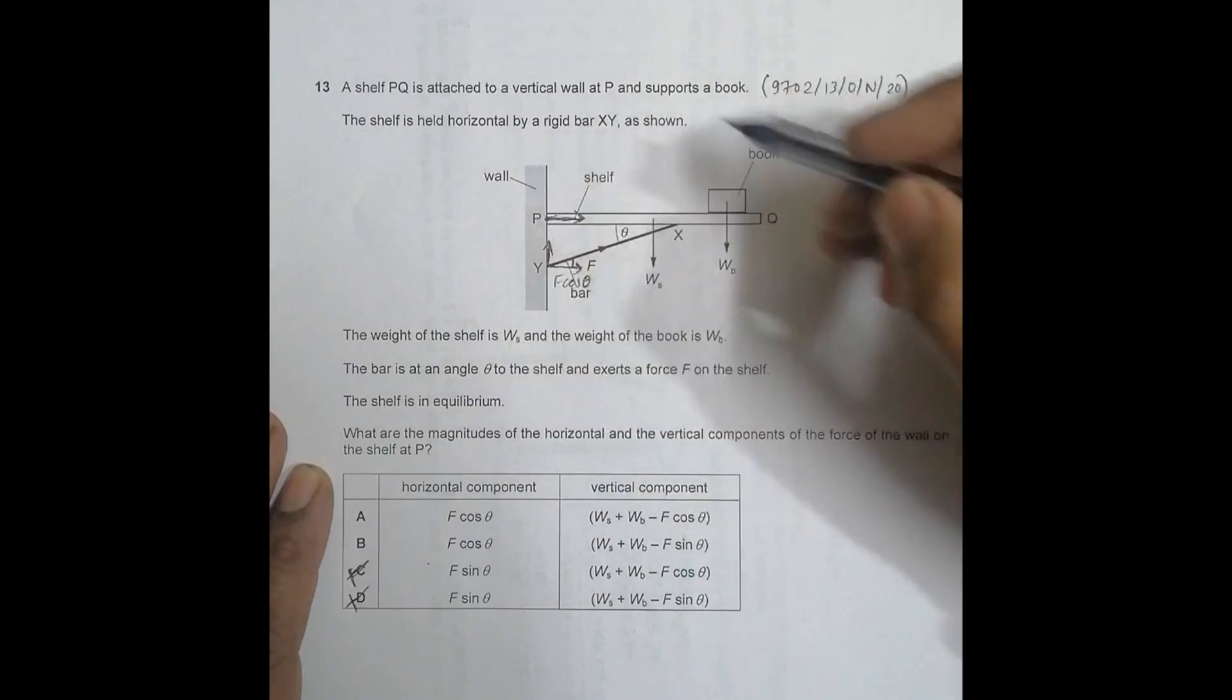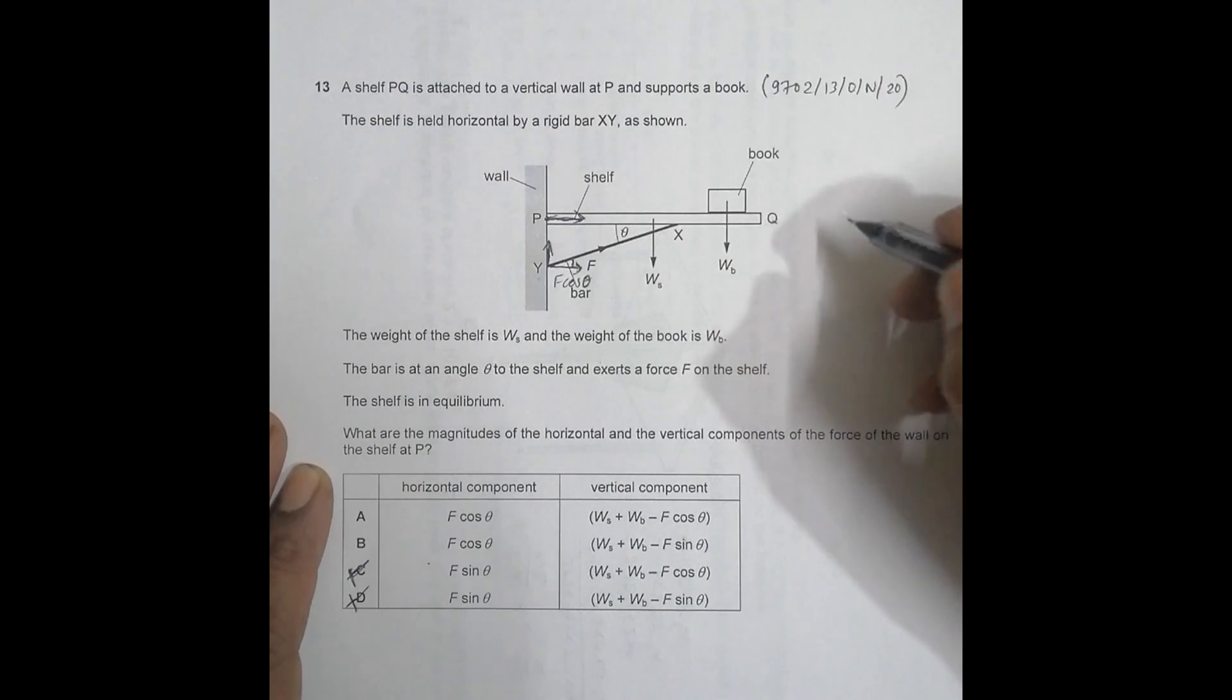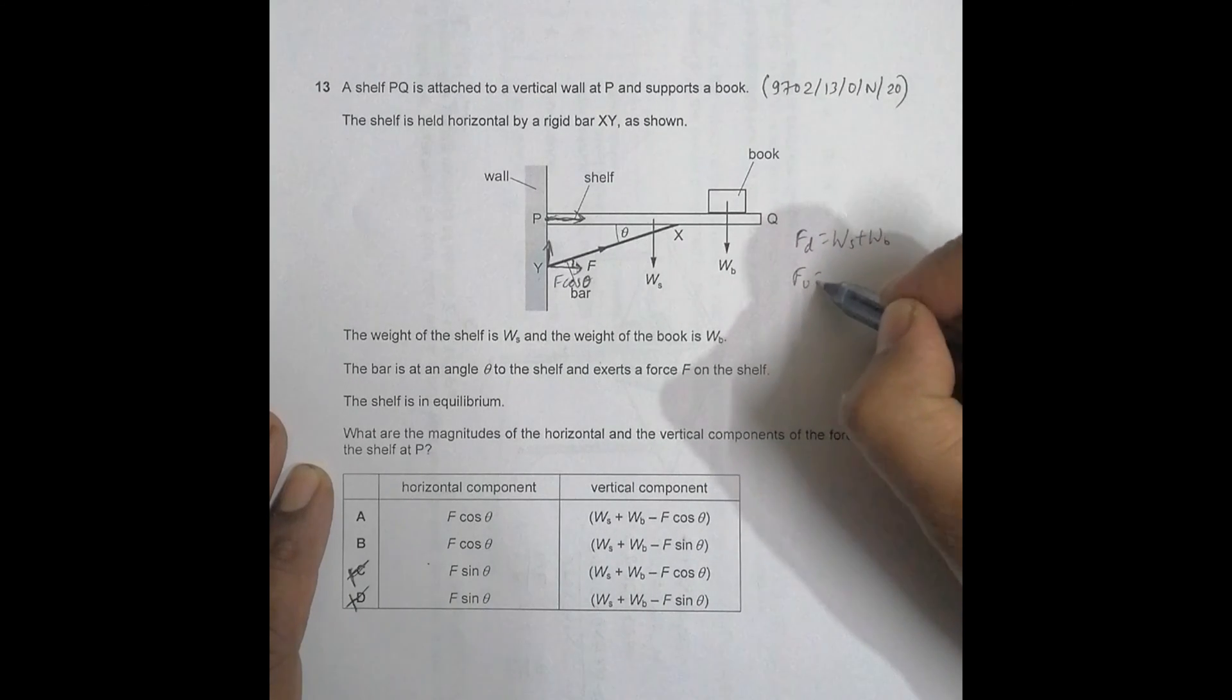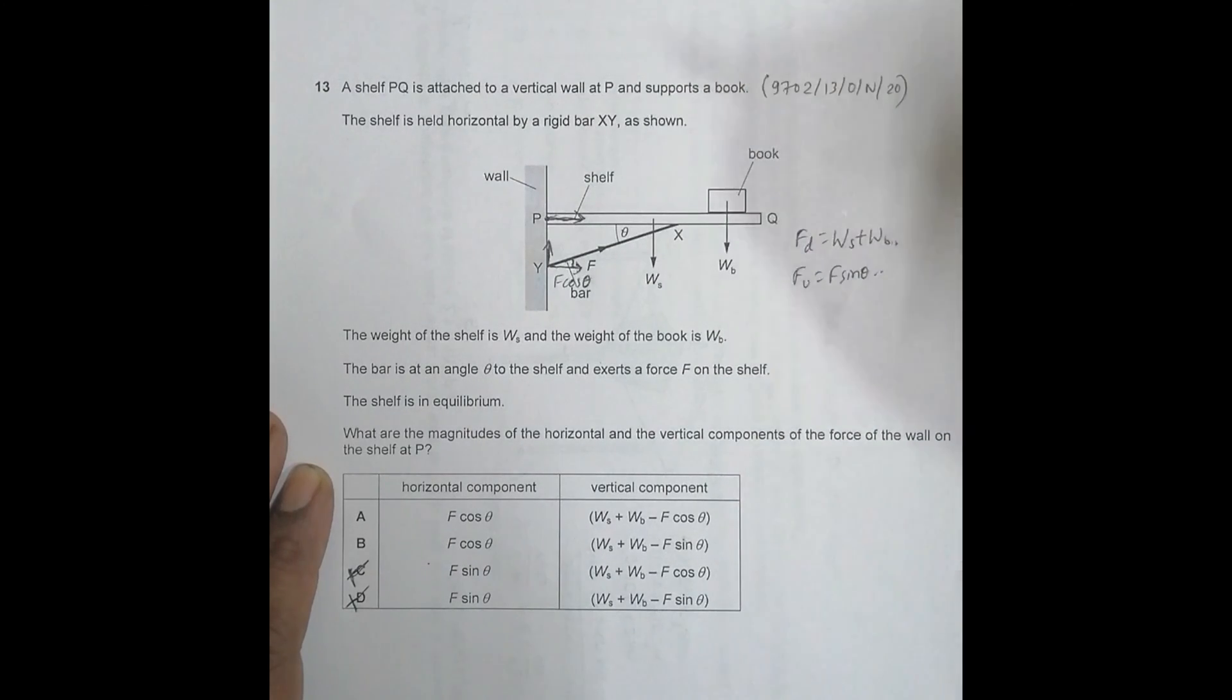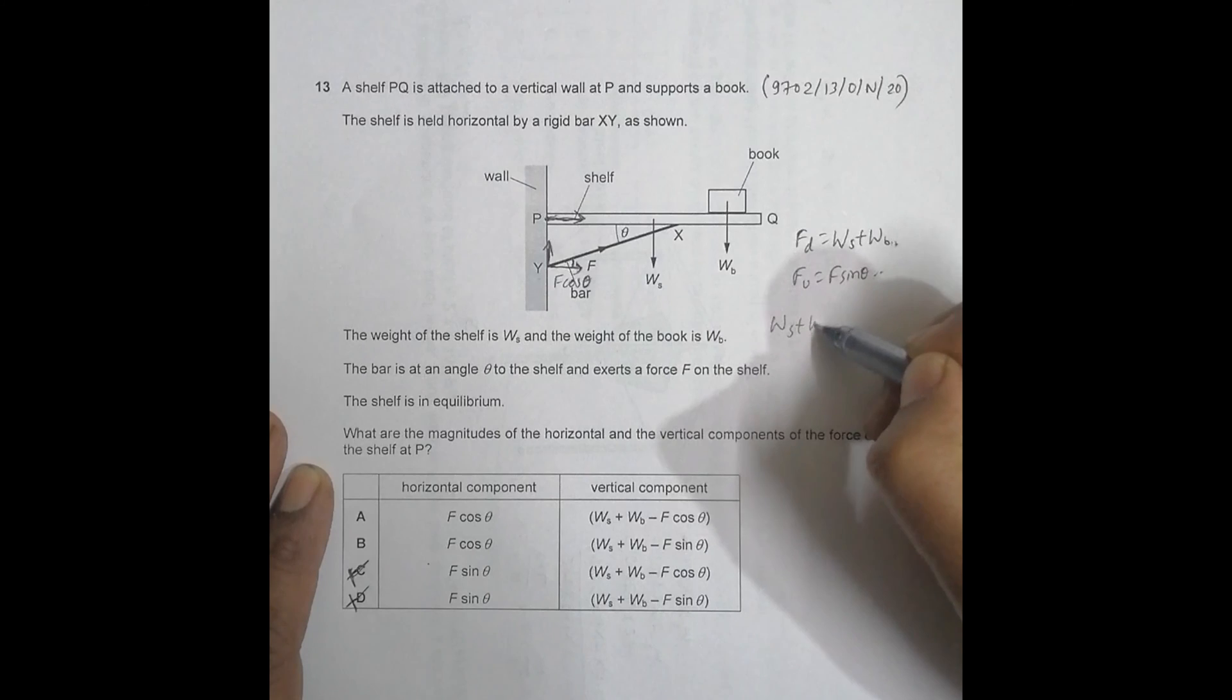It is acting vertically upward, and WS and WB act in downward direction. So total downward will be equal to WS plus WB, and the total upward will be equal to F sin of theta. They are opposite to each other. So the vertical component should be equal to WS plus WB downward minus F sin theta upward. So WS plus WB minus F sin theta.